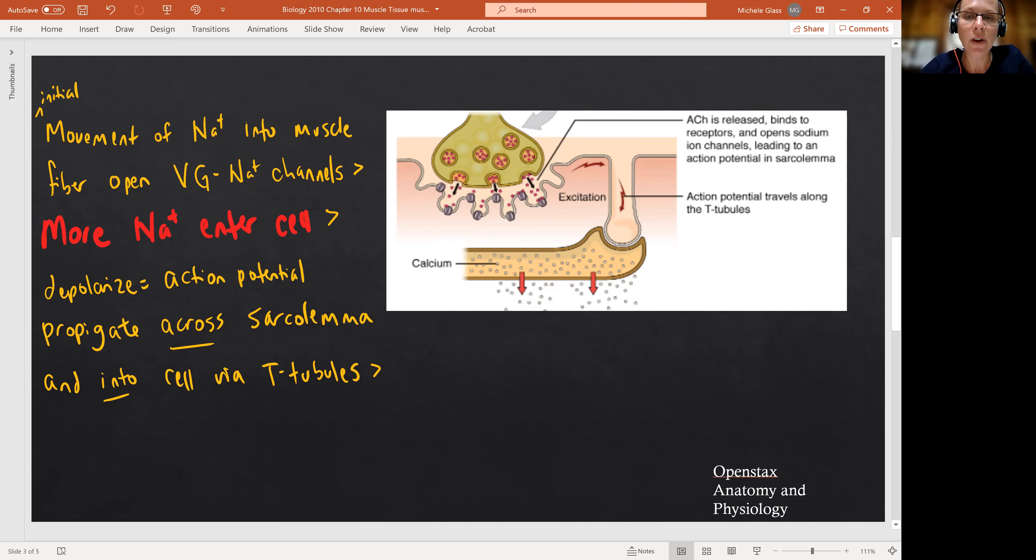So take a look at this diagram from our textbook from OpenStax. We're seeing again our neuromuscular junction. So we have that enlarged synaptic knob. That's going to be the end of our motor neuron. It's full of those vesicles of acetylcholine. We see the acetylcholine as those red dots. So what we see is the action potential travels down that synaptic knob. That's going to trigger exocytosis of the acetylcholine. The acetylcholine diffuses across that space called the synaptic cleft, and it binds to those chemically gated sodium channels that we can see embedded there in the motor end plate. That's going to give us that initial movement of sodium into the muscle fiber.